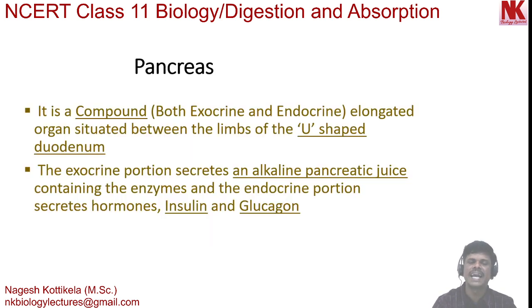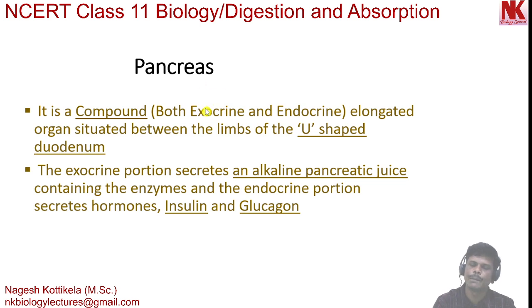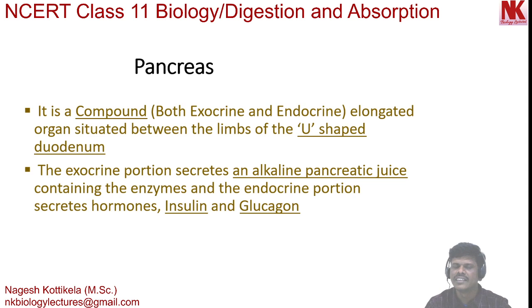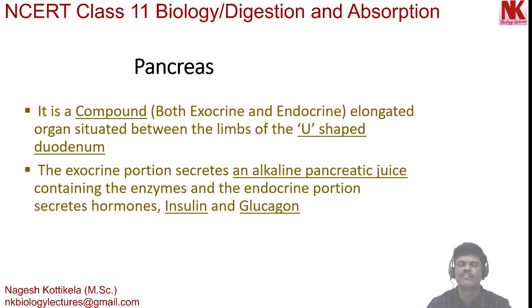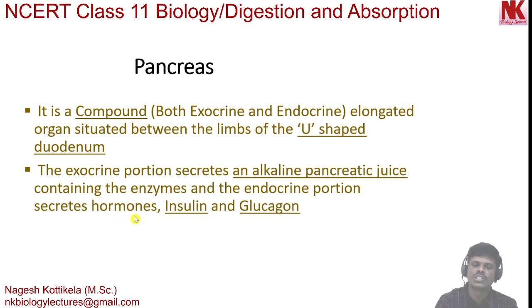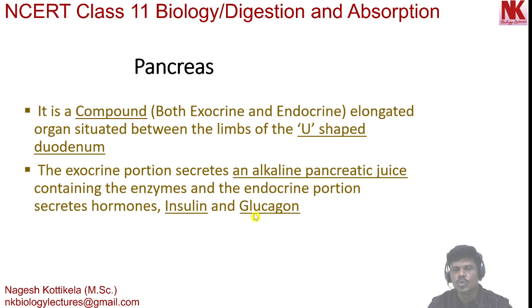The pancreas is a compound elongated organ. It is called a compound gland because it has both exocrine and endocrine parts. The exocrine part secretes an alkaline pancreatic juice — alkaline because the pH is greater than 7, at 7.8 — containing several enzymes and bicarbonates along with water. These enzymes play a very important role in digestion of several nutrients in the small intestine. The endocrine part secretes hormones called insulin and glucagon. Insulin converts excess glucose into glycogen, and glucagon converts glycogen into glucose; both hormones maintain blood glucose levels.